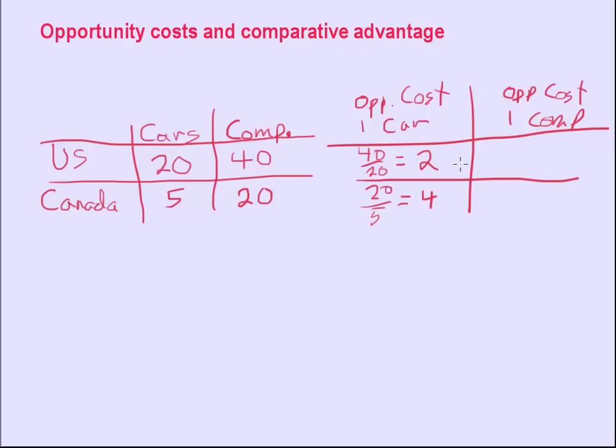Well, just the opposite. If the opportunity cost of one car is two in the United States, four in Canada, then it's going to be one half as the opportunity cost per computer, and one fourth is the opportunity cost in Canada for one computer.